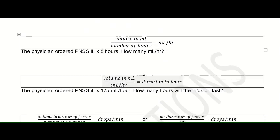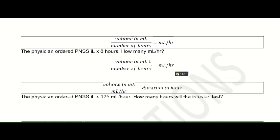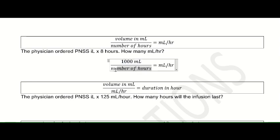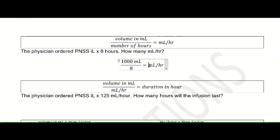The physician ordered plain NSS 1 liter times 8 hours — how many mL per hour? You need to pay attention to the volume in mL. Plain NSS 1 liter equals 1,000 mL, and the number of hours is 8. So 1,000 divided by 8 gives a value of 125 mL per hour.